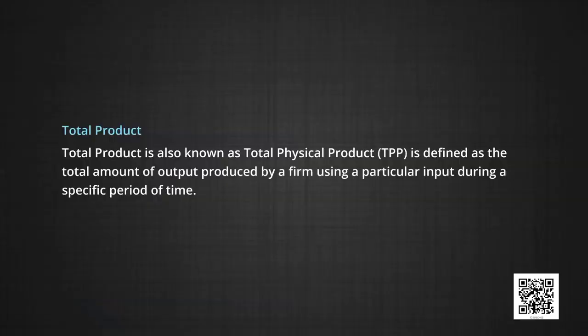We now turn to three concepts related to production: total product, average product, and marginal product. Total product is sometimes also called the total physical product and is defined as the total amount of output produced by a firm using a particular input during a specific period of time. It means the total quantity of commodity produced at a particular level of employment of a certain factor, say labor, keeping all other factor inputs constant. Alternatively, it signifies the relationship between variable input and output when all other inputs are held constant.